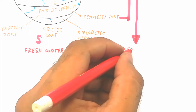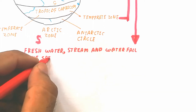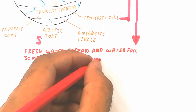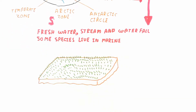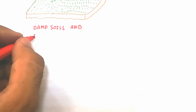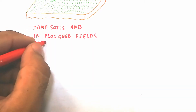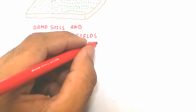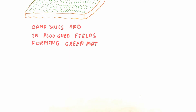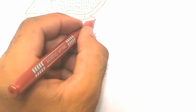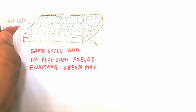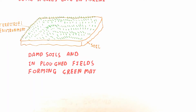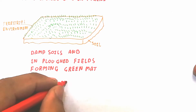Vaucheria is present in freshwater streams and waterfalls. Some species live in marine environments. Some are found in muddy places where moisture is high — in damp soil and in ploughed fields, forming green mats. The mat-like structure appears green or yellow-green, characteristic of Xanthophyta algae.